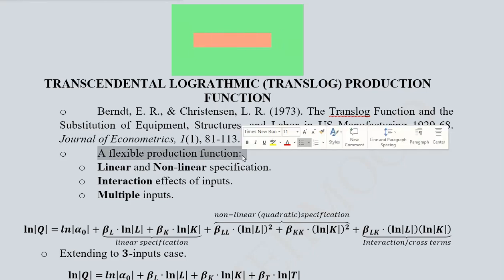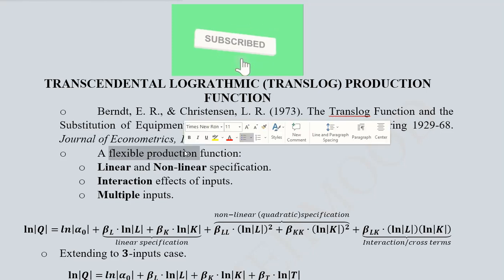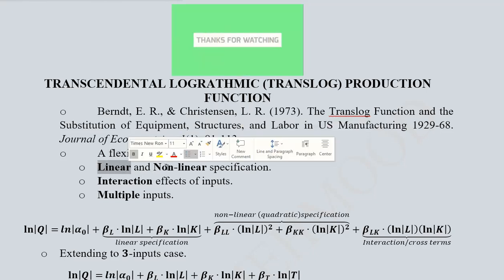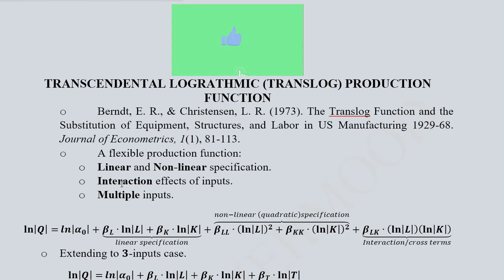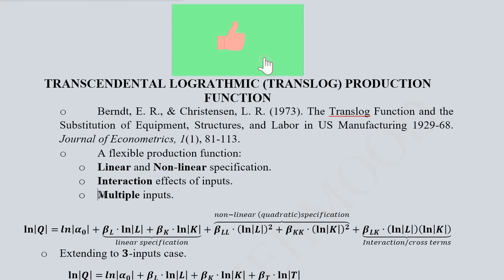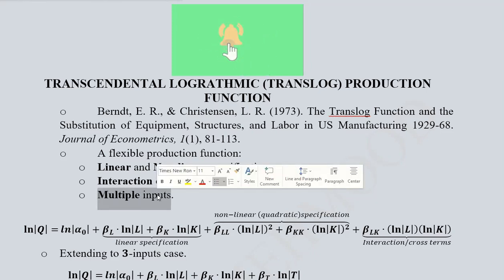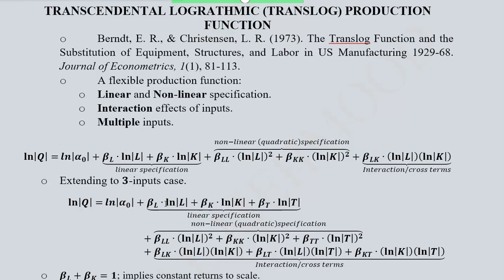The translog is essentially a flexible production function because it provides both linear and nonlinear classification. It is also innovative because it has interaction effects of the inputs — two input terms are involved in the form of a product, so their coexistence is modeled. It also offers the flexibility of including multiple inputs; we can include three, four, five, six, or more inputs. Primarily we have a standard form with two inputs, labor and capital, and it is natural logarithmic in its version.